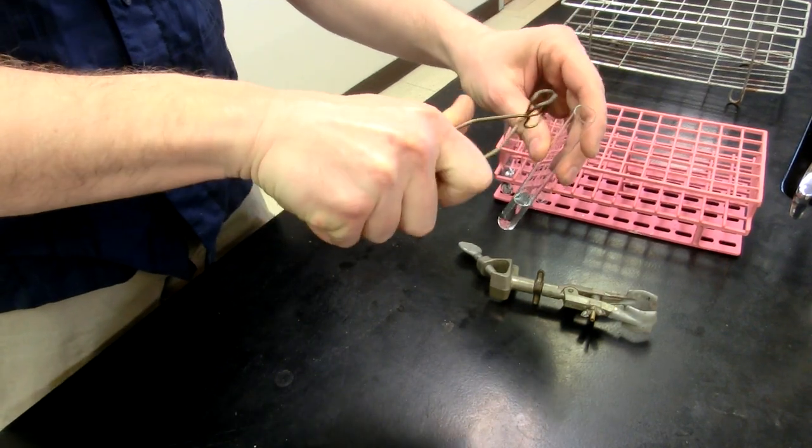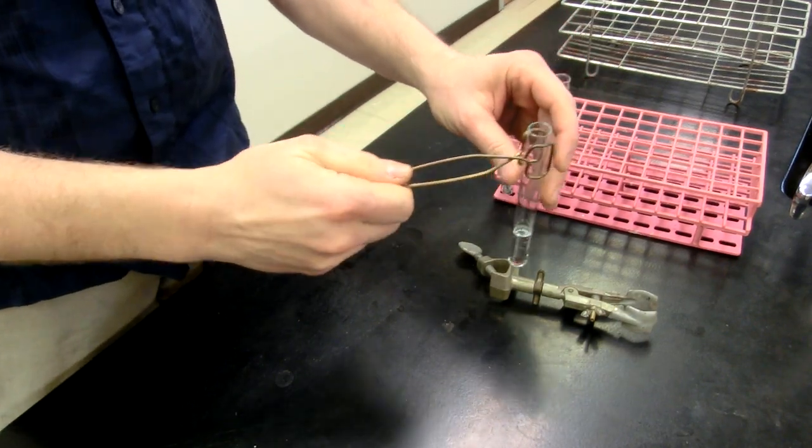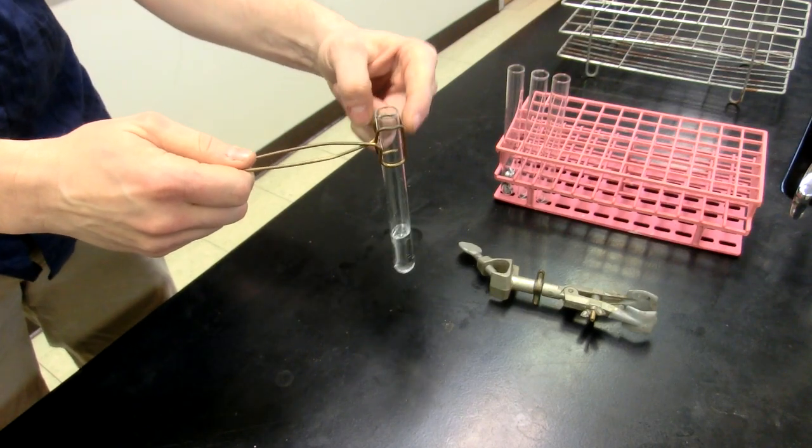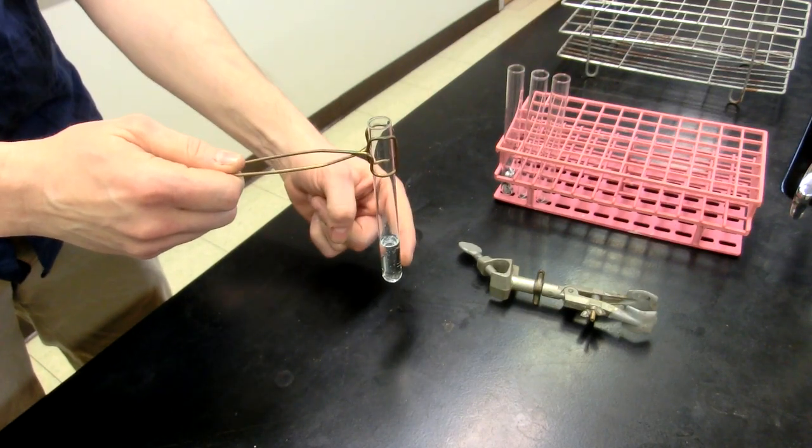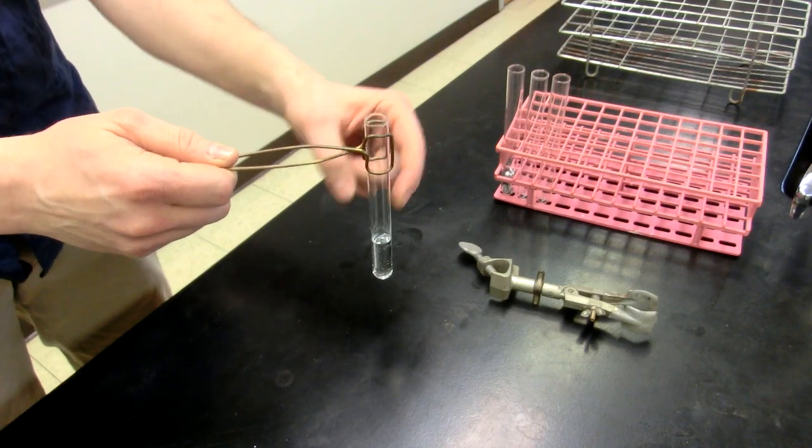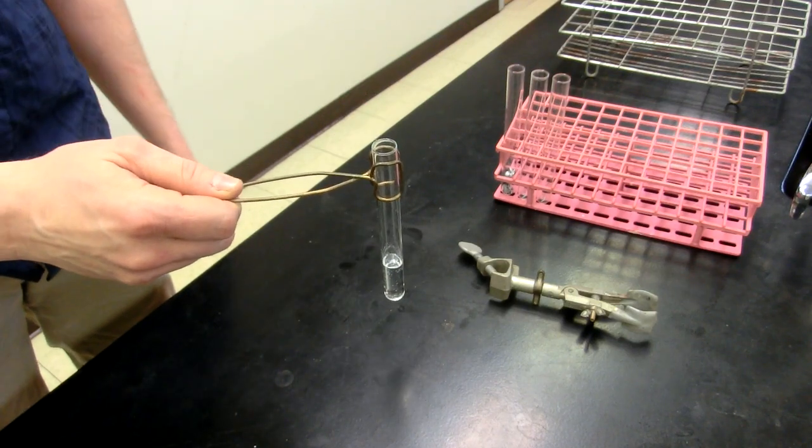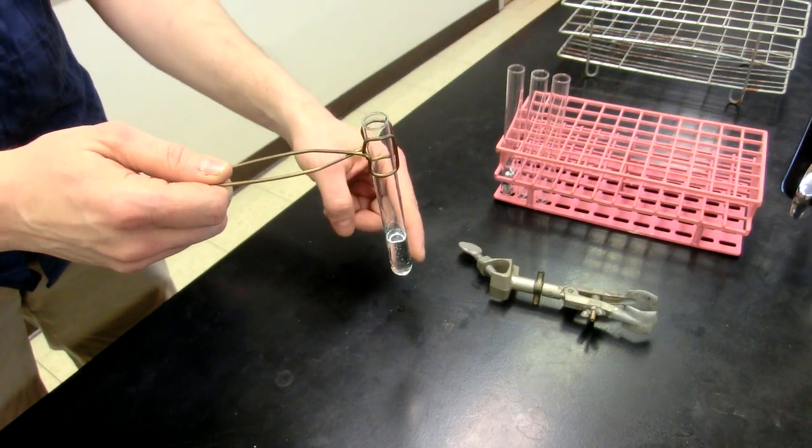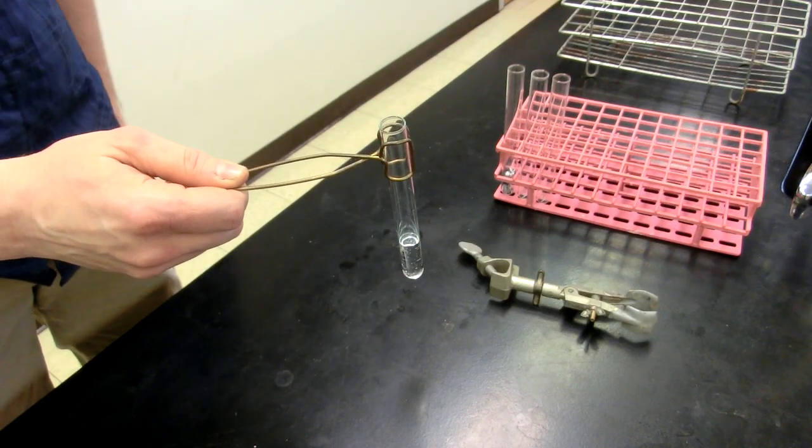You'll notice that I have the test tube holder toward the top of the test tube, not at the bottom of the test tube, not in the middle of the test tube, but at the top. Reason for that is because if you go to heat this, you want the metal as far away from the flame as possible.